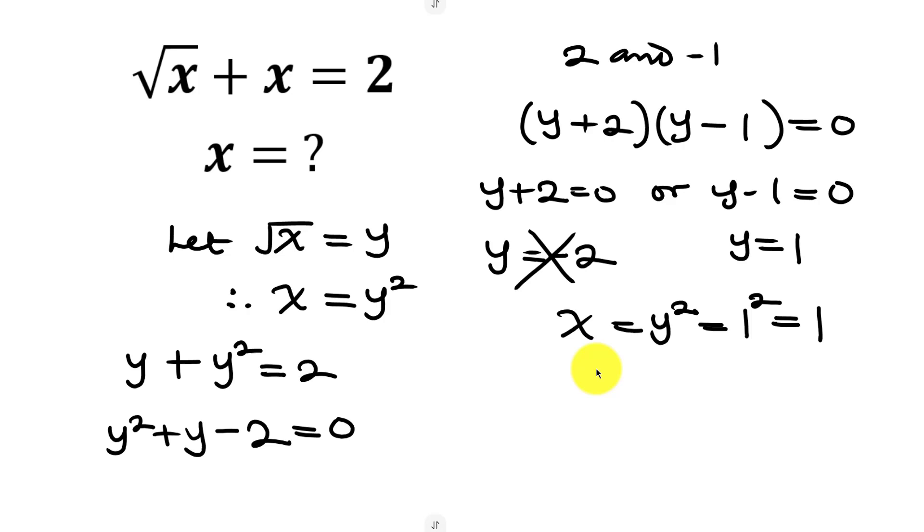Let's verify this is correct. Checking: √x + x = √1 + 1 = 1 + 1 = 2. This equals the right hand side, so x = 1 is correct.